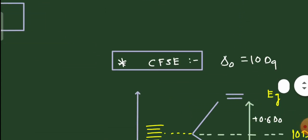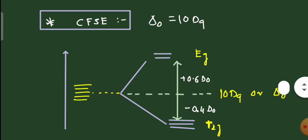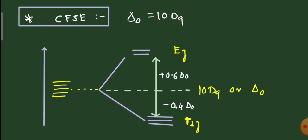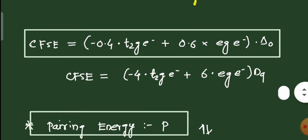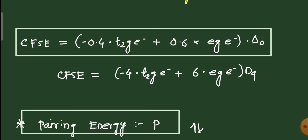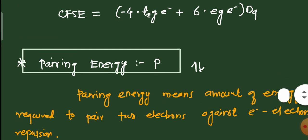The Crystal Field Stabilization Energy (CFSE) is calculated for octahedral complexes using 10Dq (also written as Δo). The separation between eg and t2g is 10Dq. To stabilize the eg orbital requires +0.6Δo energy, while t2g is stabilized at -0.4Δo. The equation for CFSE is: CFSE = (−0.4 × number of electrons in t2g) + (0.6 × number of electrons in eg) × Δo.